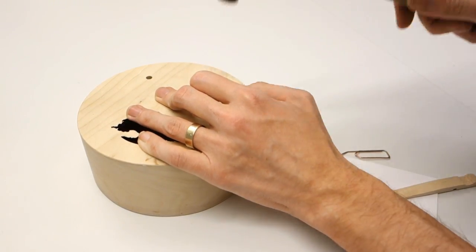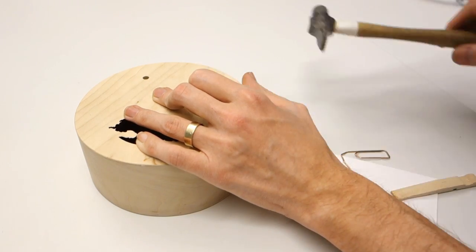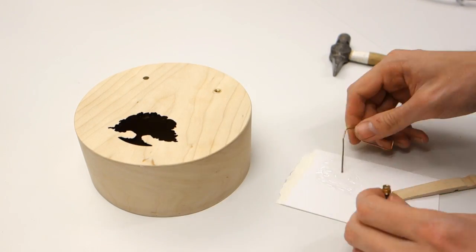To make sure that the inserts are going in straight, and that you don't damage the wood when tapping them in, you can insert a screw into the inserts and tap on the screw instead.